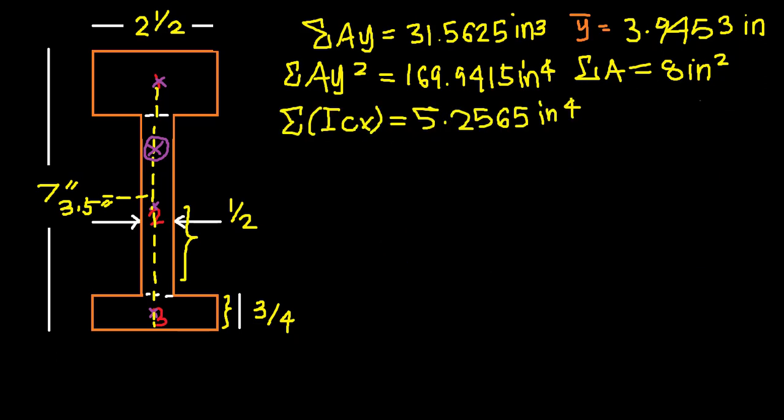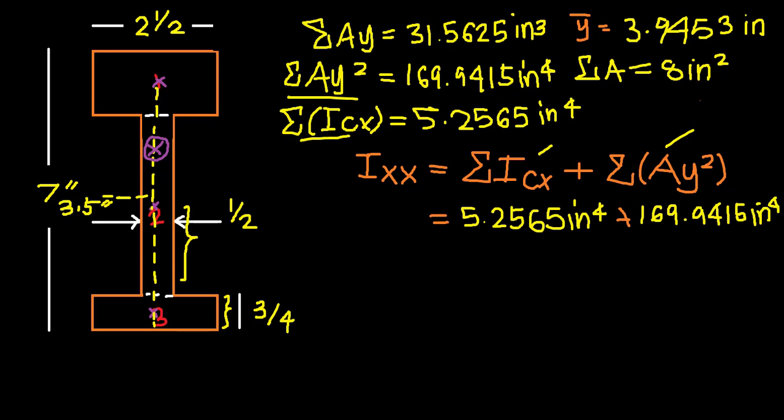Finally, our final requirement is now this one is the parallel axis theorem. For this one, it's based around the x-axis, hence the subscripts. We already have these values available to us, which is our summation of the moment of inertia per shape upon the horizontal centroidal axis. So we already have that over here. And we already have our summation of a y squared. So we simply plug in these values to get our answer. Plugging it in, and our answer.